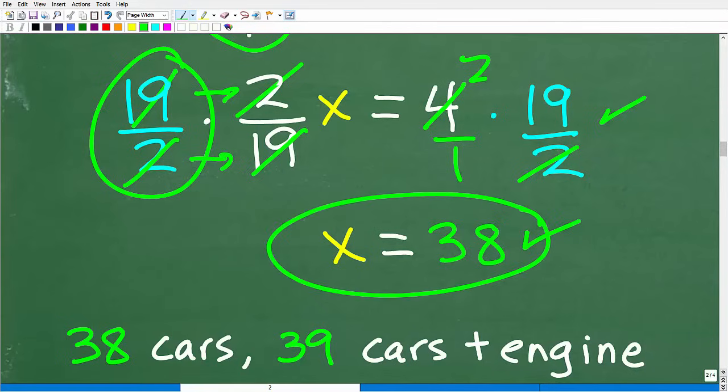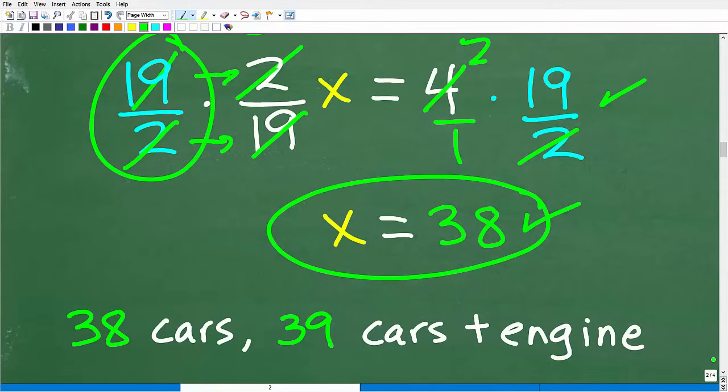Okay. So again, we have to be very careful on what the question is asking. How many total cars? So you could write down 38 cars. But if you weren't sure what your teacher was looking for, you could be like, well, 38 cars. Well, that would be also 39 cars plus the engine in total. Okay.